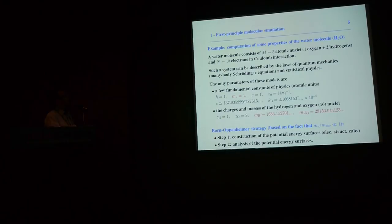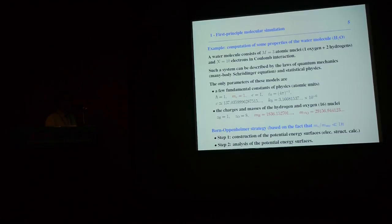In our calculation of the properties of the water molecule, we will use two steps. In the first stage, we construct the so-called potential energy surfaces using electronic structure calculations. In the second stage, we analyze these potential energy surfaces to extract some chemical and physical properties.